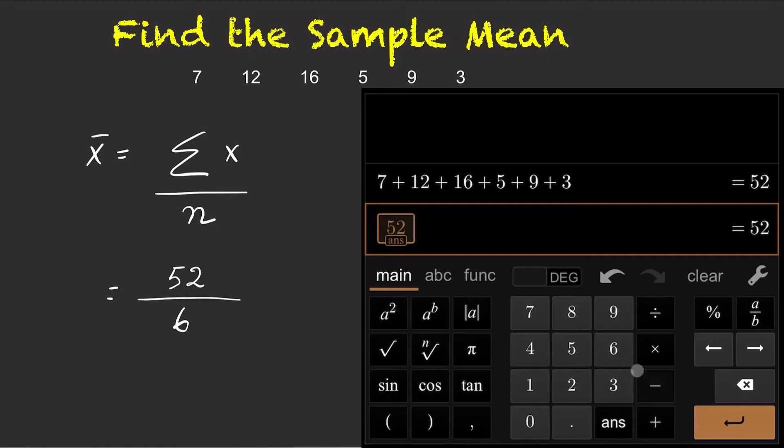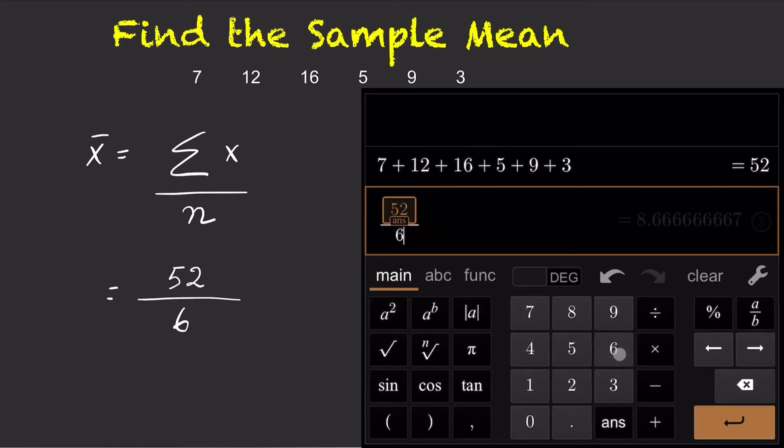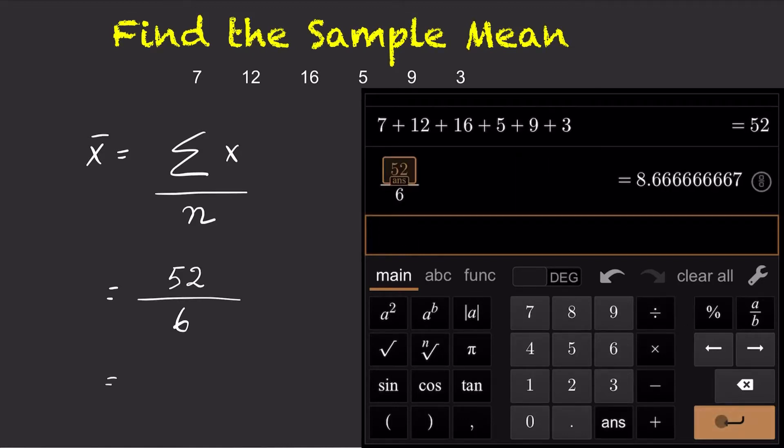Take 52, divide it by 6, and the answer is 8.67.